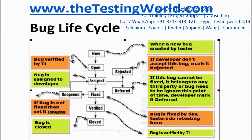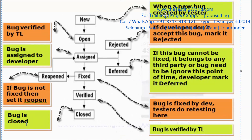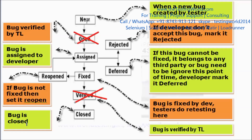We've now seen all the states a bug can move through before closing. A common interview question is: do you follow this bug lifecycle in your organization? This is the theoretical bug lifecycle. In practice, organizations skip some steps — as a tester, if I report a bug, nobody else verifies it as valid; it goes directly to the developer. Also, if the developer fixes the bug and I verify it, I directly close it rather than setting it to 'Verified' first. The lead does not double-check. Those two stages only apply to the theoretical lifecycle.